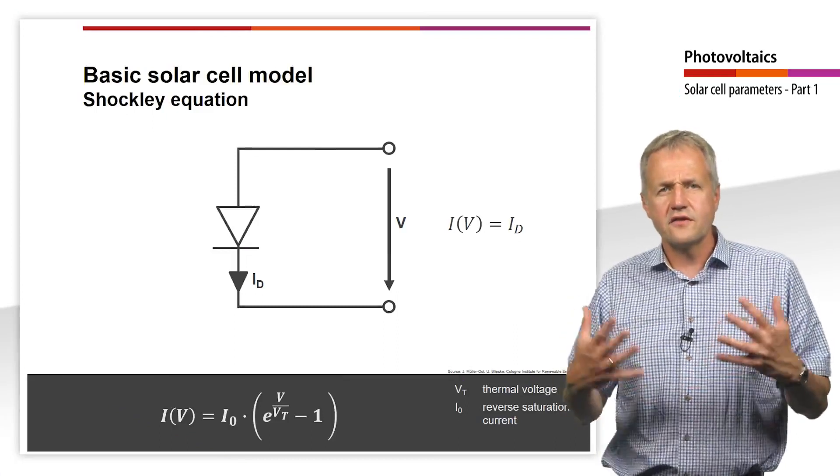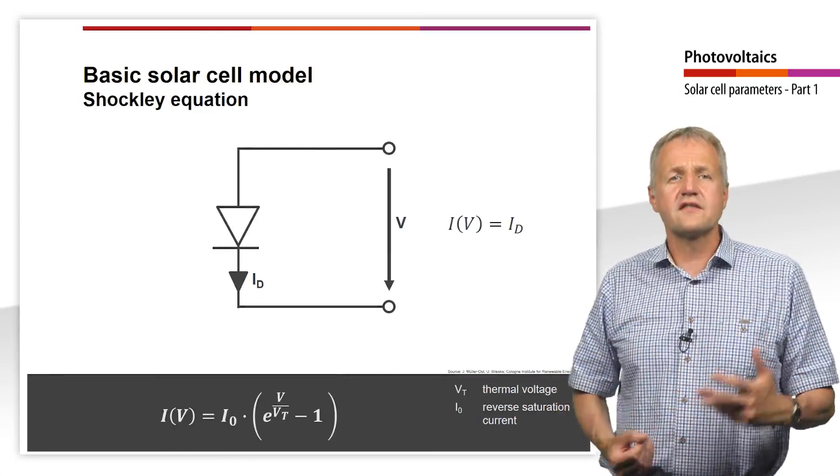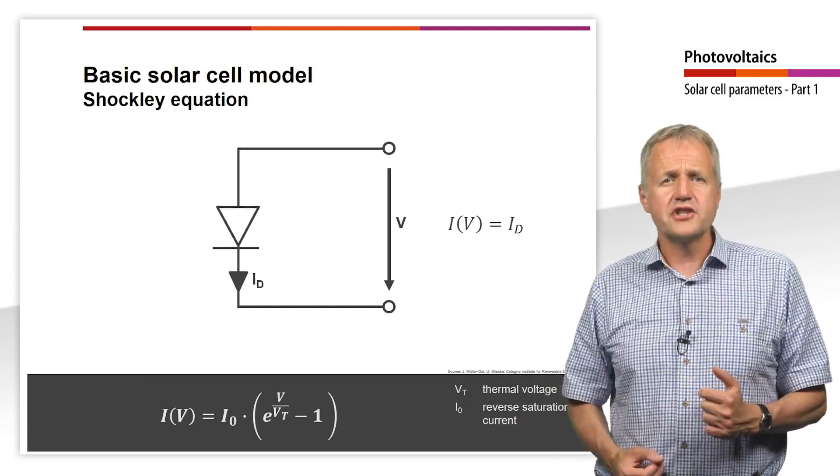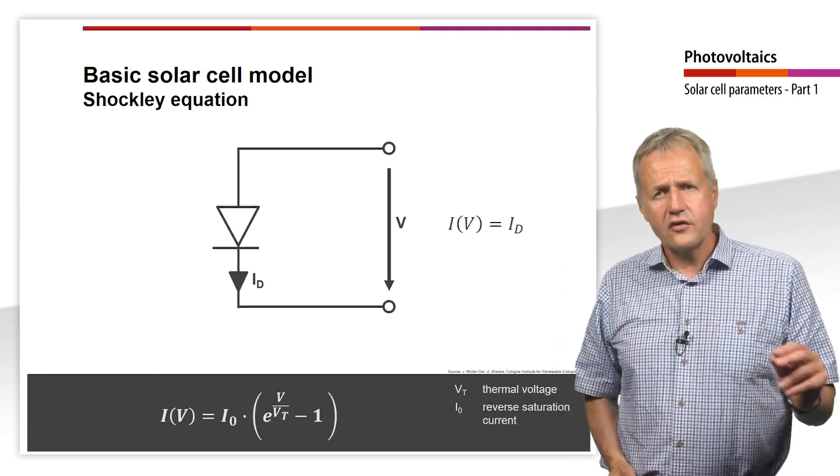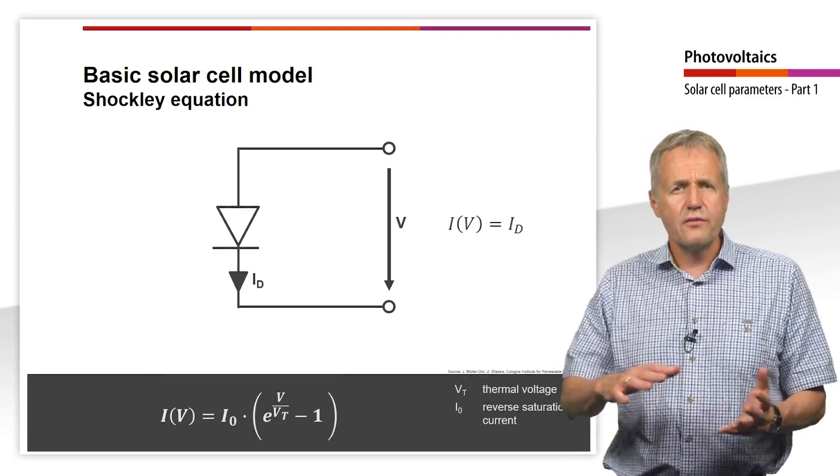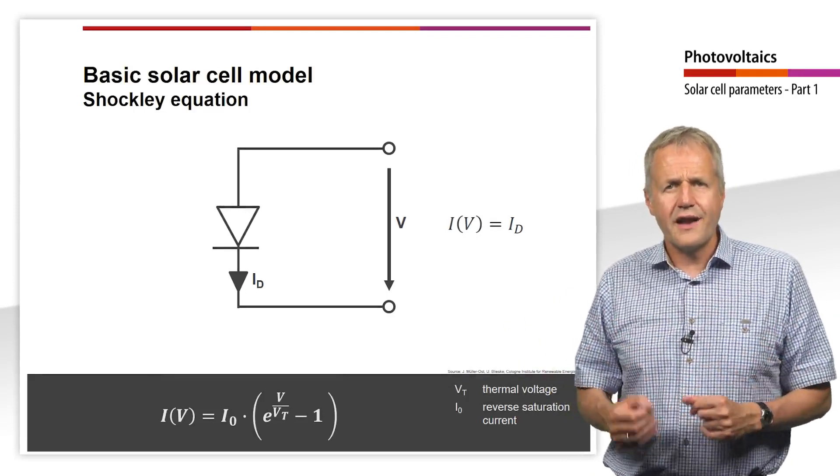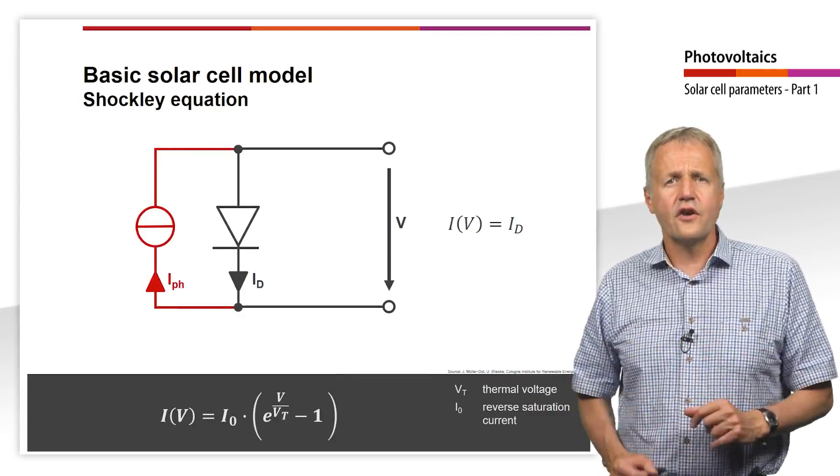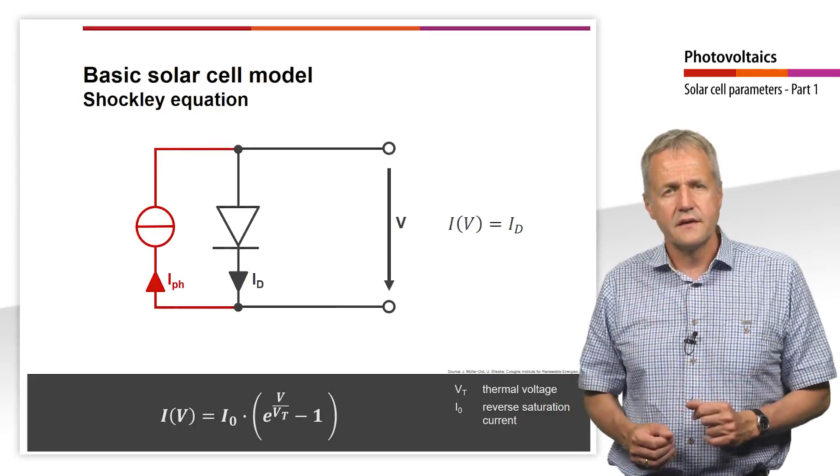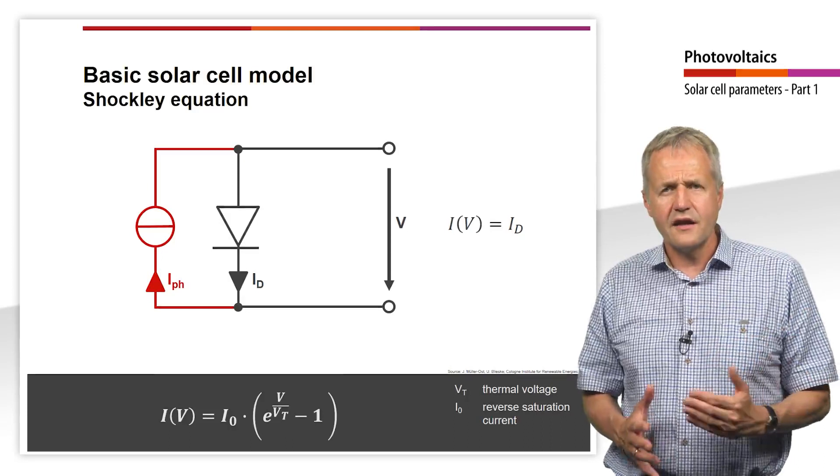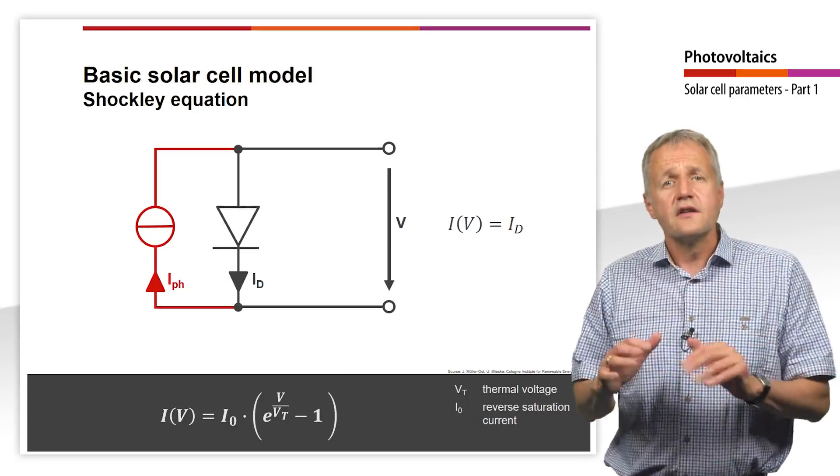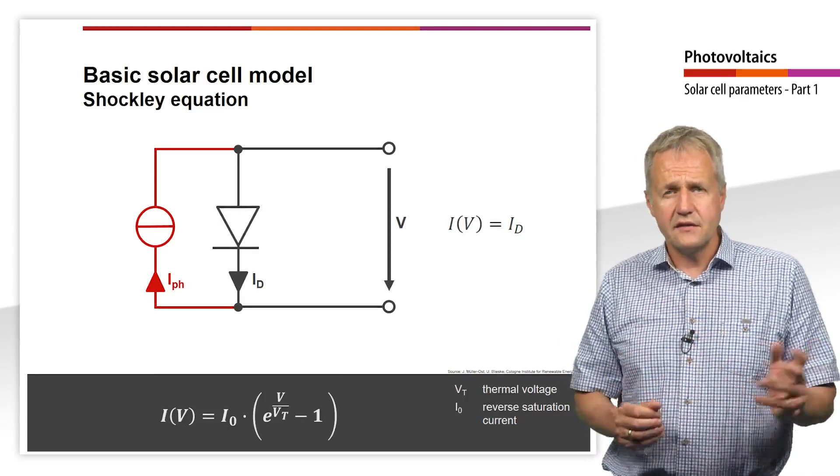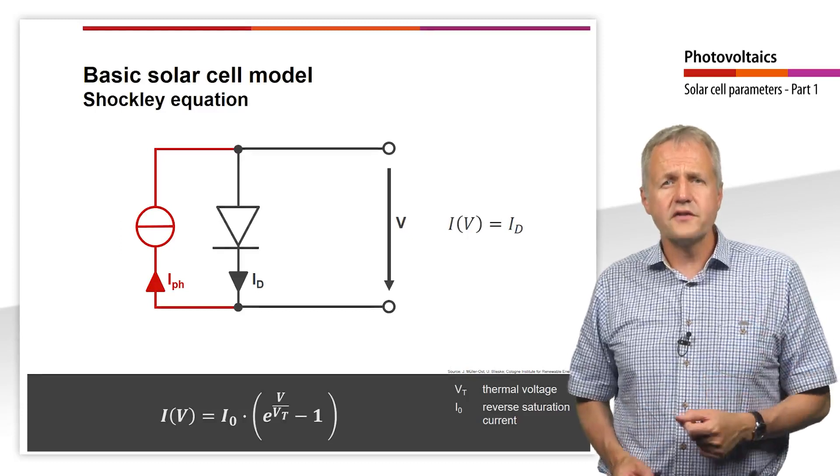Now we want to expand the circuit diagram so that it also reflects the behavior of an illuminated solar cell. We have seen that under illumination and with closed circuit a current flows in the reverse direction. In order to visualize this behavior in the electrical model, we now add a constant current source connected in parallel to the circuit diagram. Since the current of the solar cell flows in the reverse direction, the current supplied by the current source is opposite to the diode current Id. It corresponds to the photocurrent.